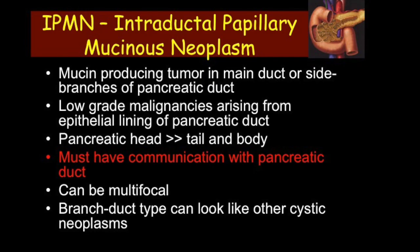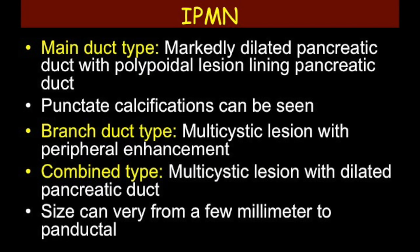Intraductal papillary mucinous neoplasms (IPMNs) are mucin-producing tumors that can occur either in the main pancreatic duct or in the side branches. These are low-grade malignancies arising from the ductal lining, and they must have communication with the pancreatic duct; sometimes they can be multifocal. The main pancreatic duct type is associated with markedly dilated pancreatic duct and can have a polypoid lesion within the duct. Branch duct types can be multicystic with peripheral enhancement, and combined-type lesions have components in both the main duct and side branches.